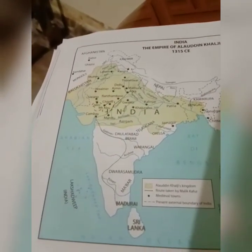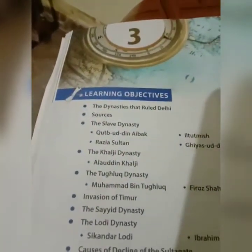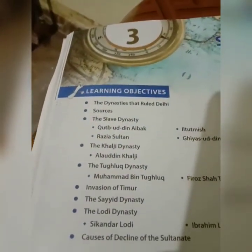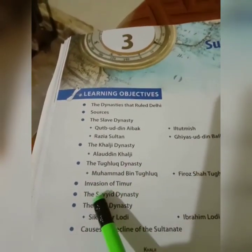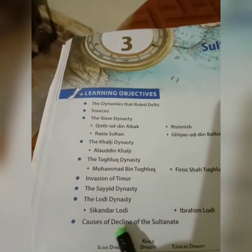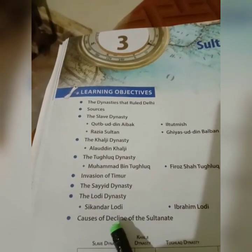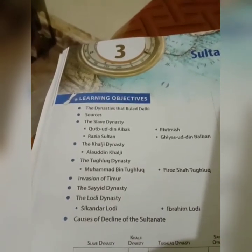We come to the end of this video. In our next video, we will talk about the remaining dynasties: the Tughlaq dynasty, the invasion of Taimur, the Sayyid dynasty, the Lodi dynasty, and the causes of the collapse and decline of the Sultanate. Thank you.